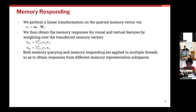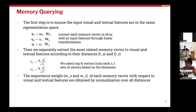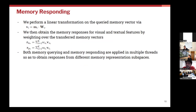In memory querying, you compute distances given the x vectors, y vectors, and memory vectors m. Based on distance scores ds and dt, you take the top-k vectors and do a weighted sum using weights ws and wt derived from ds and dt correspondingly, to generate rx and ry. These rx and ry are then passed as input to the encoder-decoder framework to generate the text output.